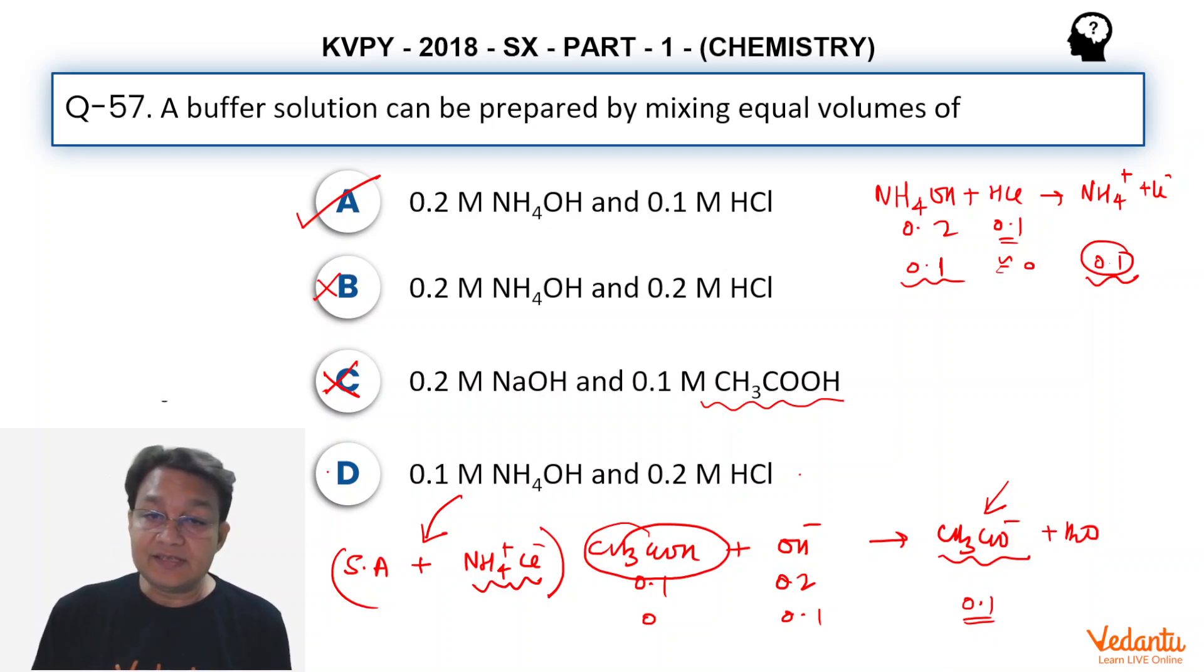Similarly, C can also be described as strong base and weak base together. Strong base plus weak base. That is also not a buffer.